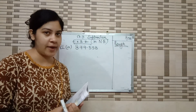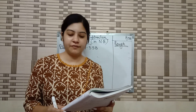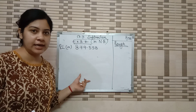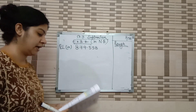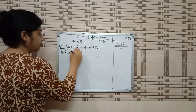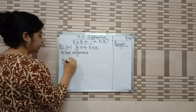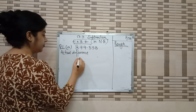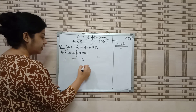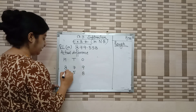Let's start the question. Question number 1: find the actual and the estimated difference by rounding off the numbers to the nearest tens. We have to find both actual and estimated. First we do actual. Write the place values — 1s, 10s, 100s. Leave one line gap for any borrow that may be needed.